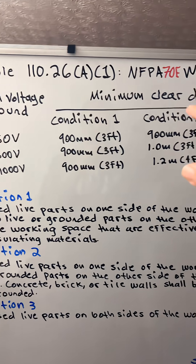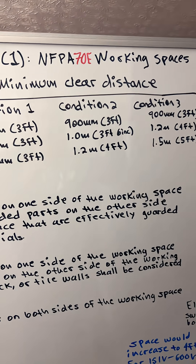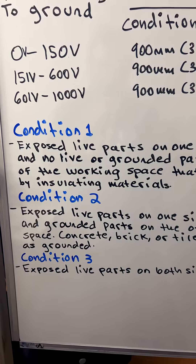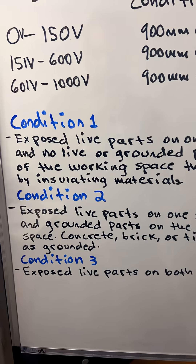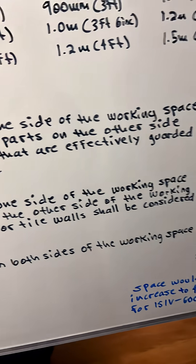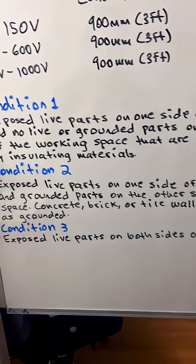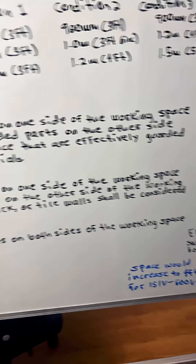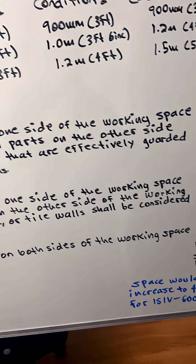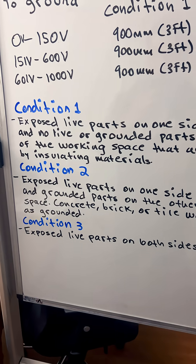We have the minimum clear distance for condition 1, condition 2, and condition 3. Condition 1 is exposed live parts on one side of the working space, and all live or grounded parts on the other side of the working space that are effectively guarded by insulated materials.